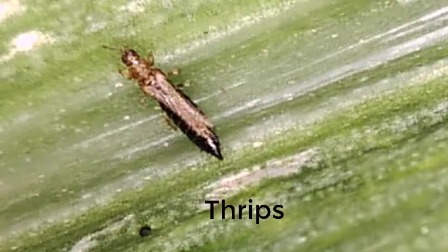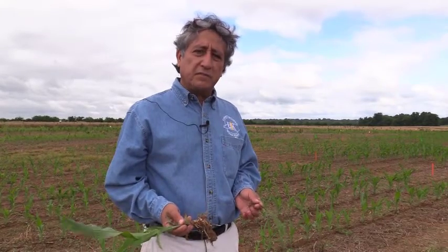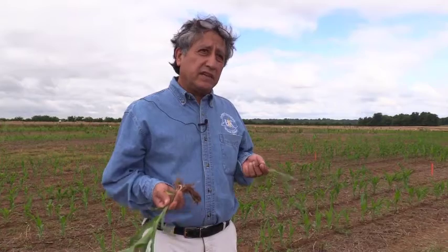One was the corn thrips, and the other was corn flea beetles. These insects, probably in most cases for corn, don't require insecticide seed treatment, although they can cause some issues. For example, the corn flea beetle can transmit a disease — a bacterial wilt — and that can kill plants and reduce yields.